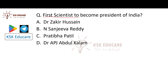The first scientist to become president of India — Option A is Dr. Zakir Hussain, Option B is N. Sanjeeva Reddy, Option C is Pratibha Patil, Option D is Dr. APJ Abdul Kalam. The correct answer is Dr. APJ Abdul Kalam, the first scientist president. Dr. Zakir Hussain was the first Muslim president. N. Sanjeeva Reddy was India's youngest president at 64 years. Pratibha Patil was our first woman president.